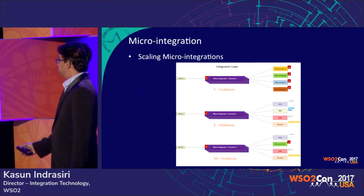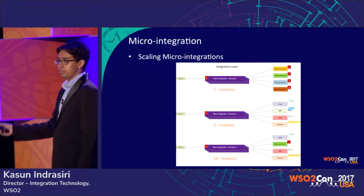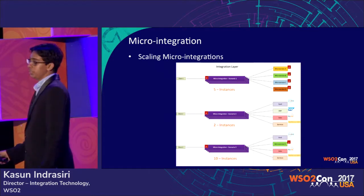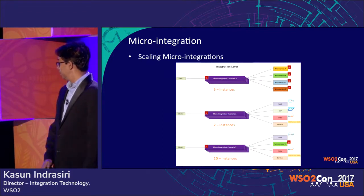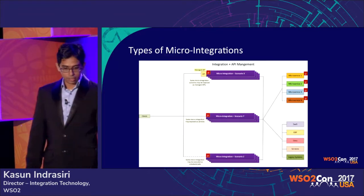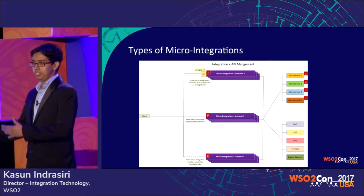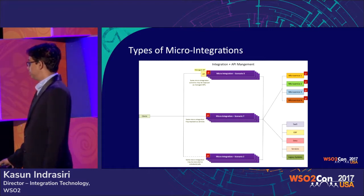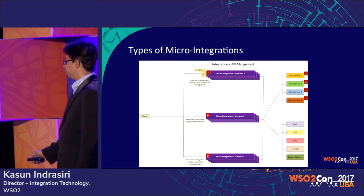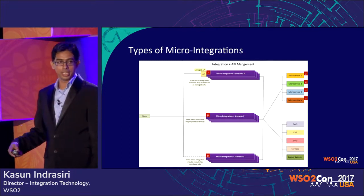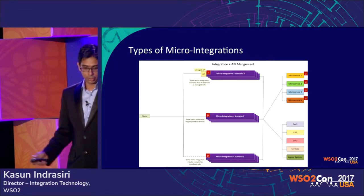You can have three different integration scenarios and independently scale them by simply changing the number of instances for a given scenario. Types of microintegration include REST API-exposing integrations presenting a RESTful interface to the external world, and scheduled jobs that run periodically — for example, syncing data between Salesforce and SAP through scheduled execution.